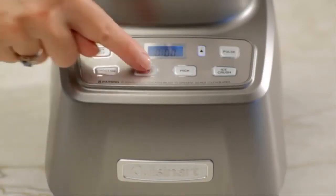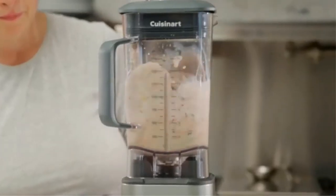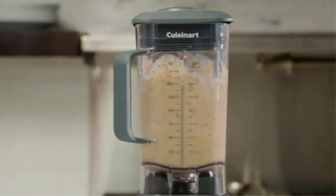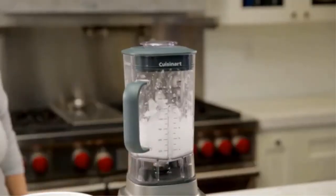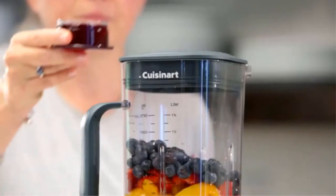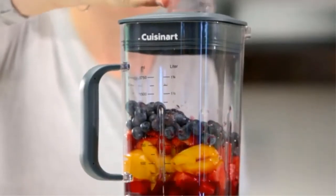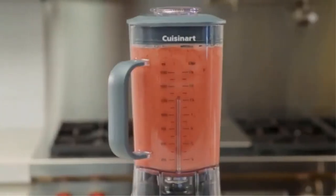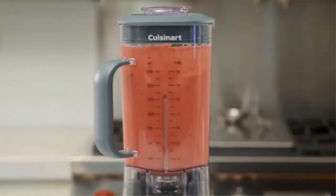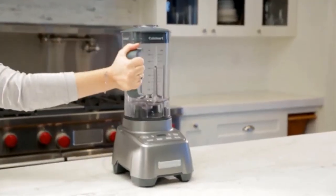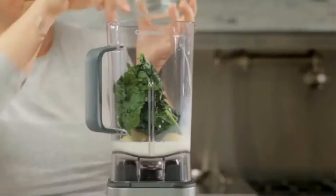Press a button on the illuminated LCD display to choose low, high, or pulse, or press the pre-programmed setting for smoothie or ice crush. The tight seal lid comes with a 2 ounce removable measuring cup and allows liquids to be added directly into the blender jar when in operation.